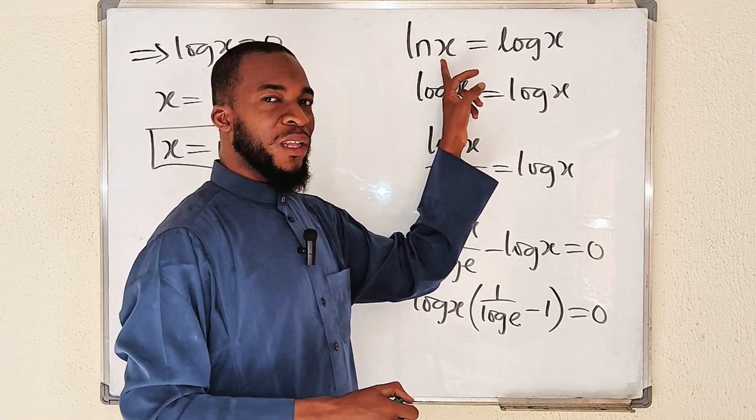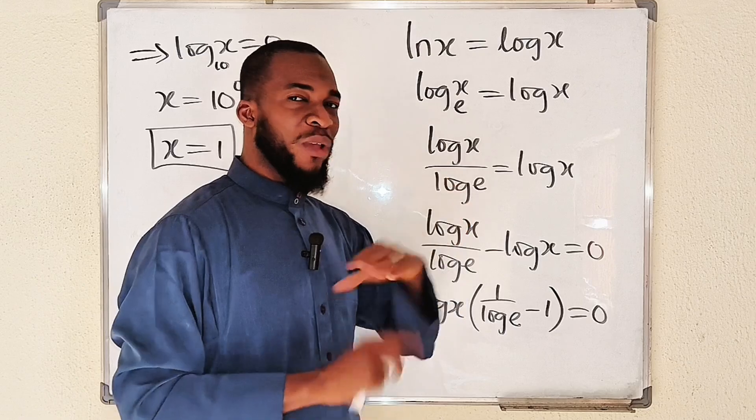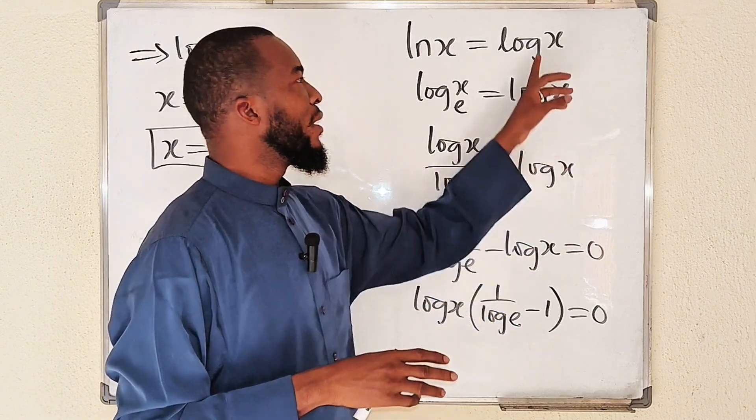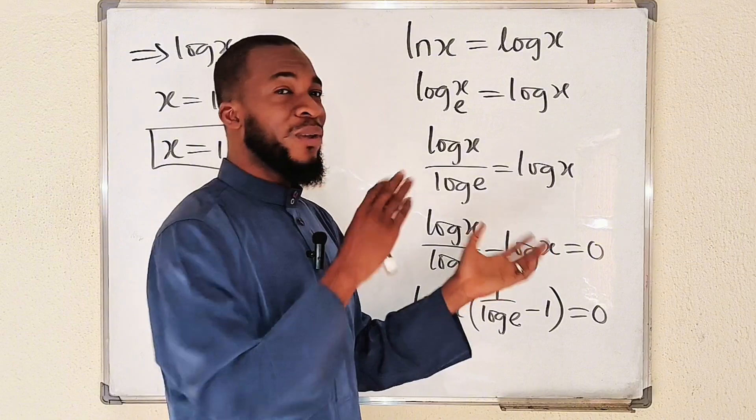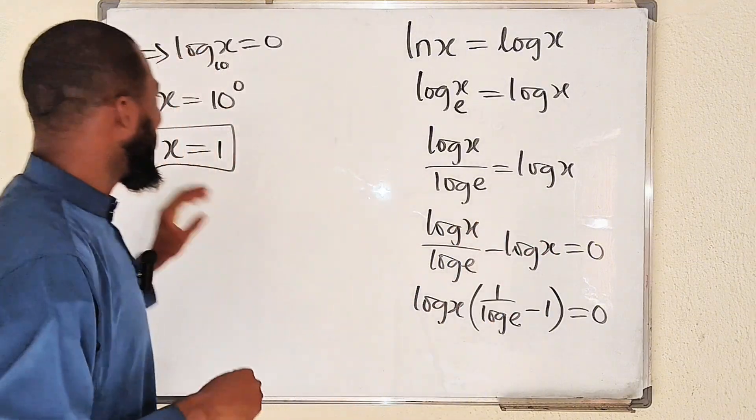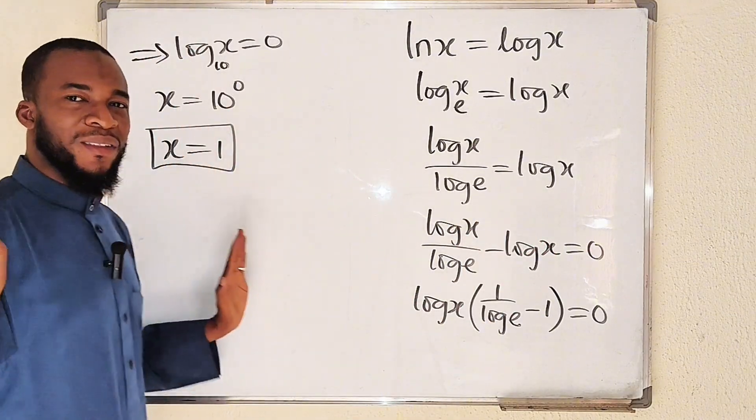If you have natural log of 1, it will give you 0 because log of 1 to any base will give you 0. Log of 1 will also be equal to 0. 0 equals 0, which implies x must be equal to 1. Simple.